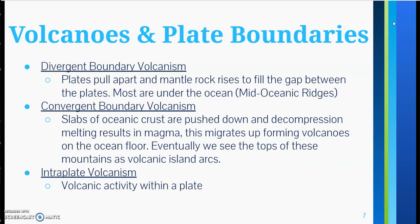Convergent boundary volcanism occurs when slabs of oceanic crust are pushed down and decompression melting results in magma. This migrates up, forming volcanoes on the ocean floor. Eventually, we see the tops of these mountains as volcanic island arcs as they build.